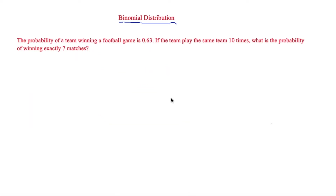The first question says that the probability of a team winning a football game is 0.63. If the team plays the same team 10 times, what is the probability of winning exactly seven matches? First of all, we'll see why we can use the binomial distribution in this particular case.